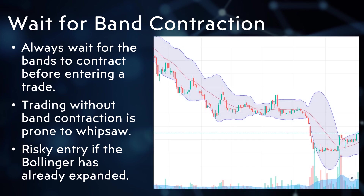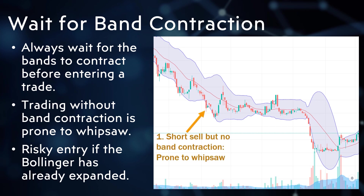In this example, a short sale is prone to whipsaw if entered when the band has already expanded or there is no actual contraction. The correct entry should be when the bands have already contracted before placing the short.